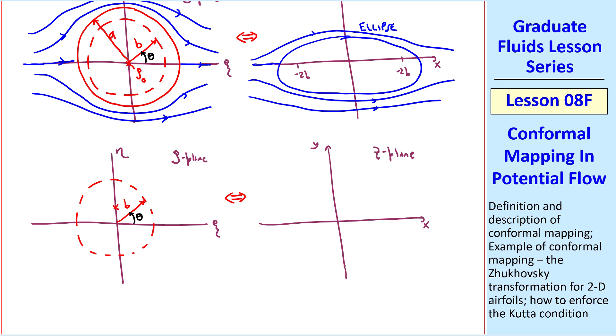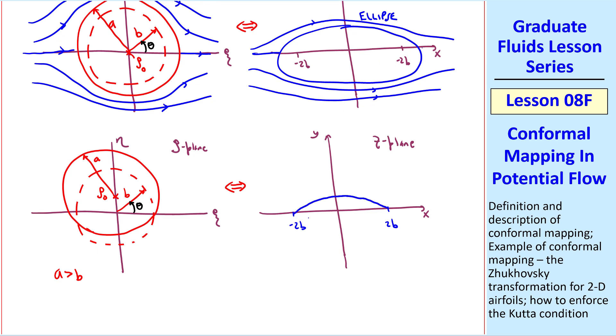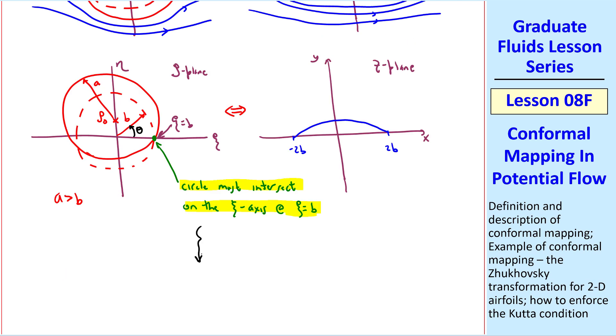Suppose we move up in the zeta plane so that zeta naught lies on the eta axis, the imaginary axis. So that our circle shifts upward. The circle is of radius a, where a is greater than b in this case. While this turns out to map into an arc as sketched here, note that for proper application of the Joukowsky transformation, the circle must intersect on the xi axis at xi equal b, which is here. A little bit of algebra and trig gives us this equation for a, where xi naught and eta naught are the coordinates of zeta naught, the center of the circle. This equation guarantees that the circle intersects at the proper place.